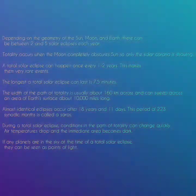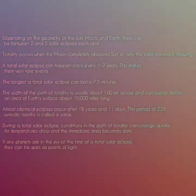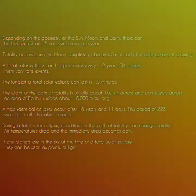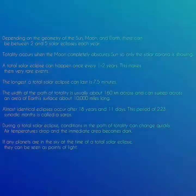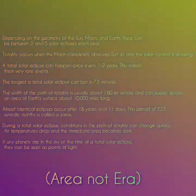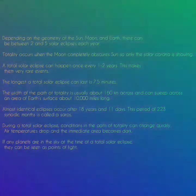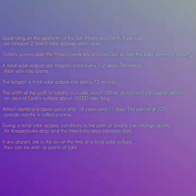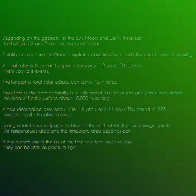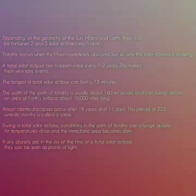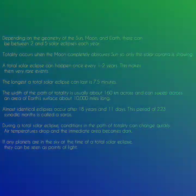During a total solar eclipse, conditions in the path of totality can change very quickly. Air temperatures drop and the immediate area becomes dark. If any planets are in the sky at the time of a total solar eclipse, they can be seen as points of light.